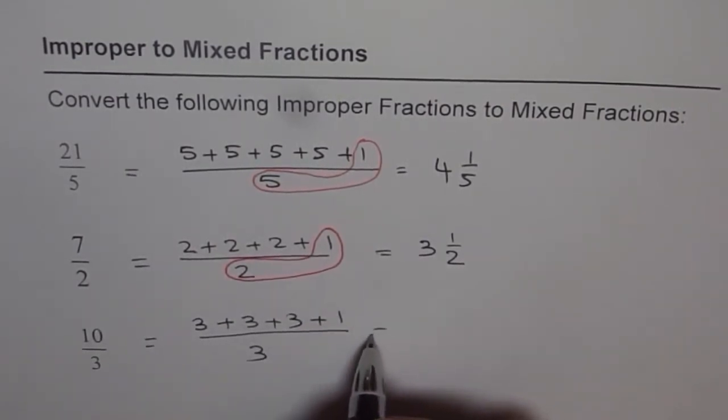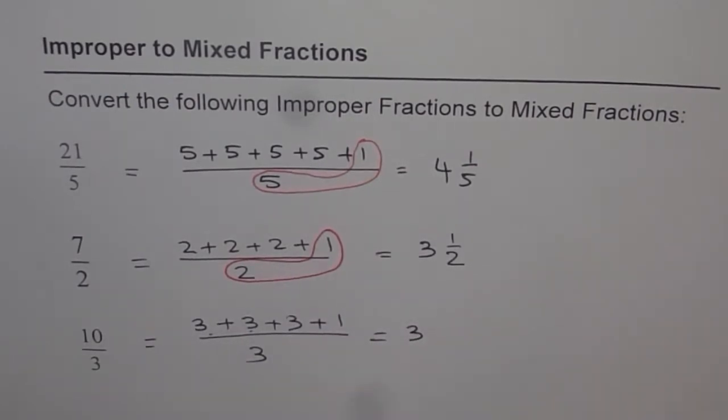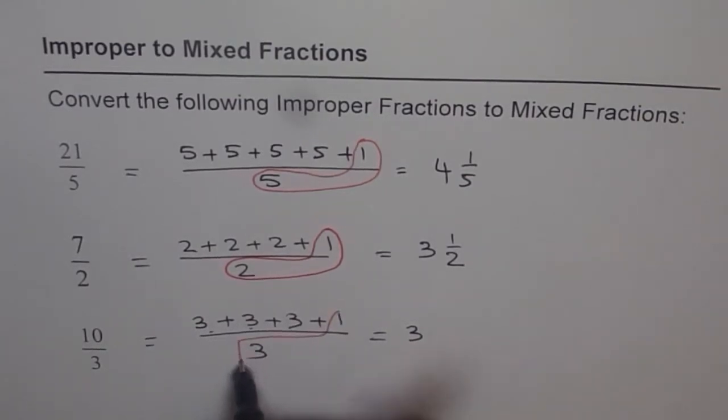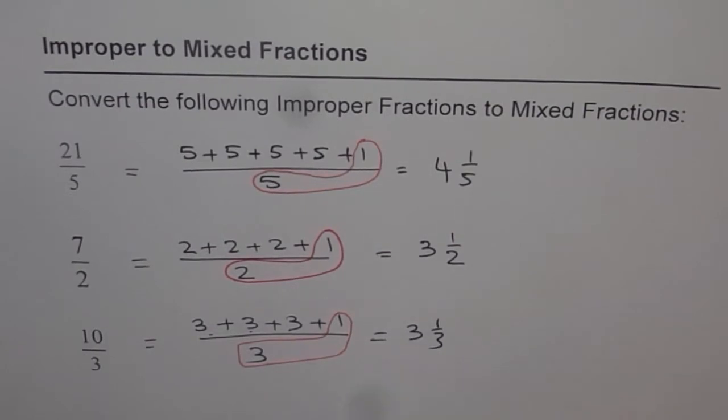That means 9 plus 1 is 10. That's how you get it. How many 3's did you get? 3 threes. What remains? 1 remains. So we get 3 and 1 over 3 as the mixed fraction. So that is how you can convert improper fraction to mixed fraction using repeated addition.